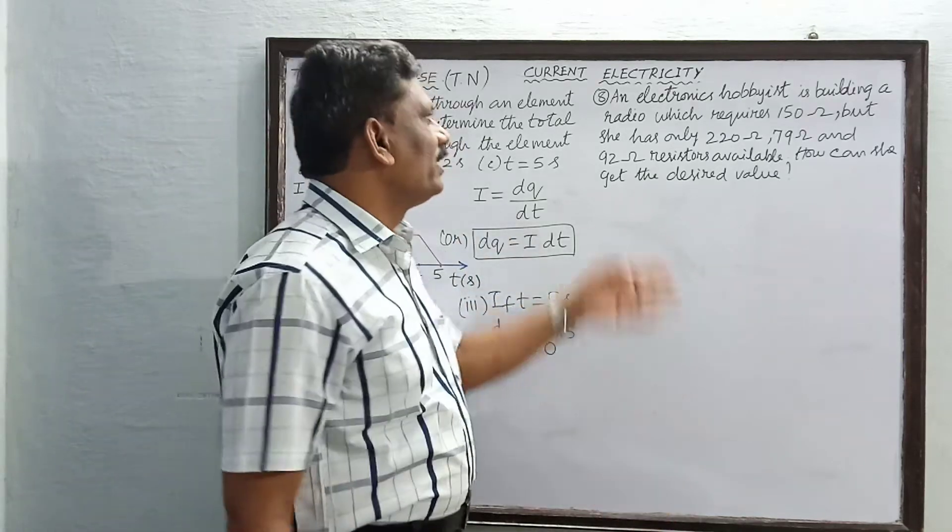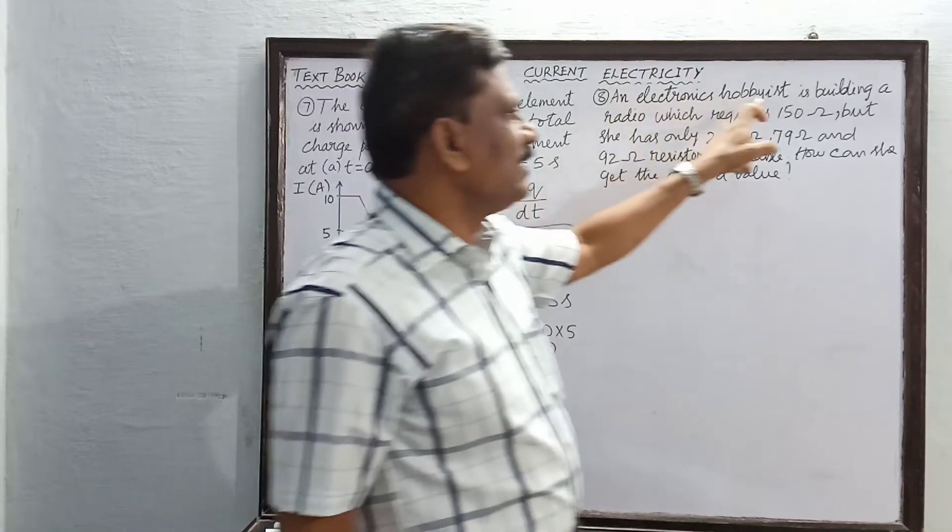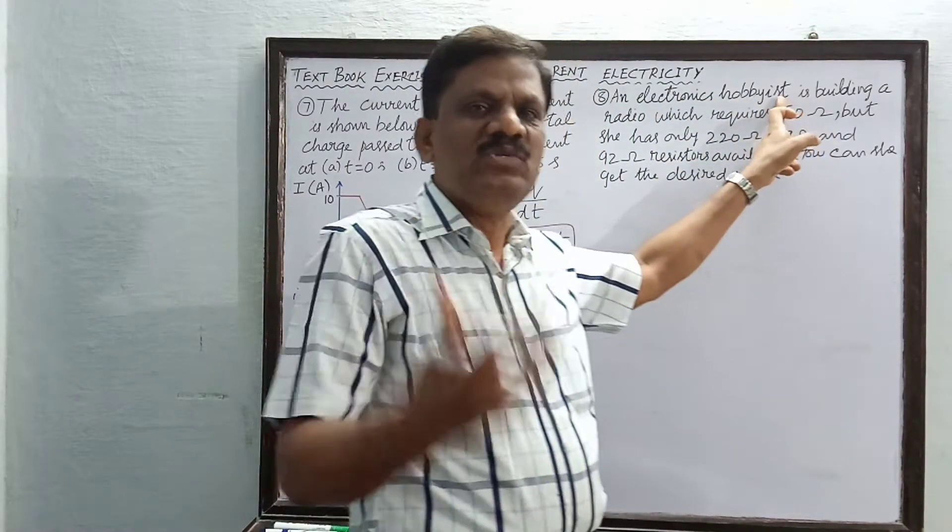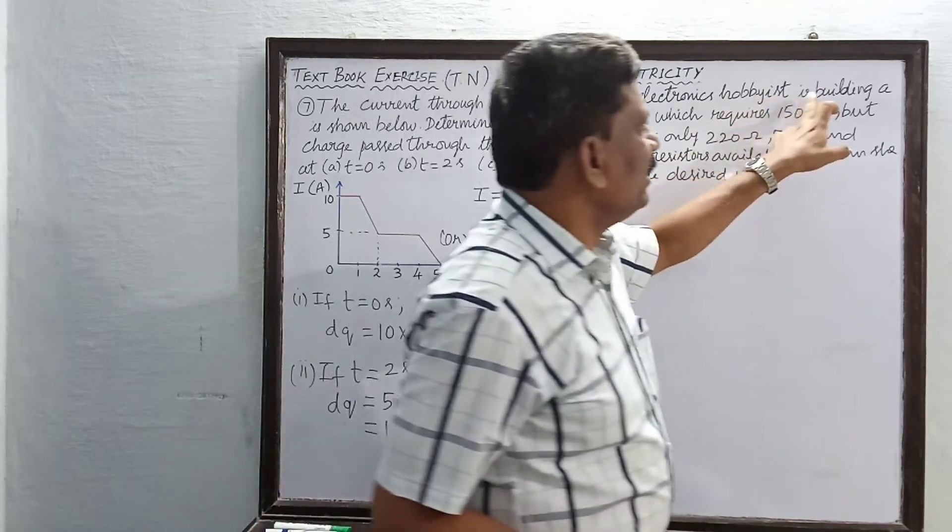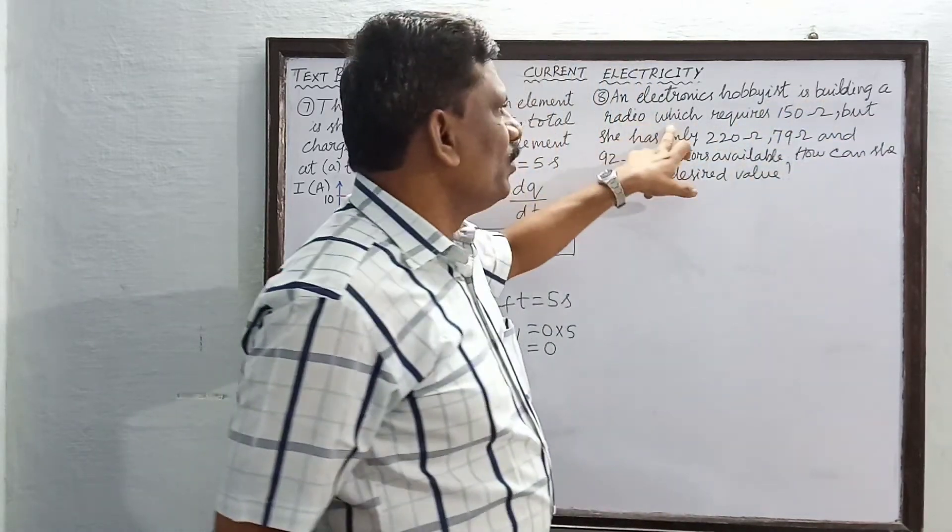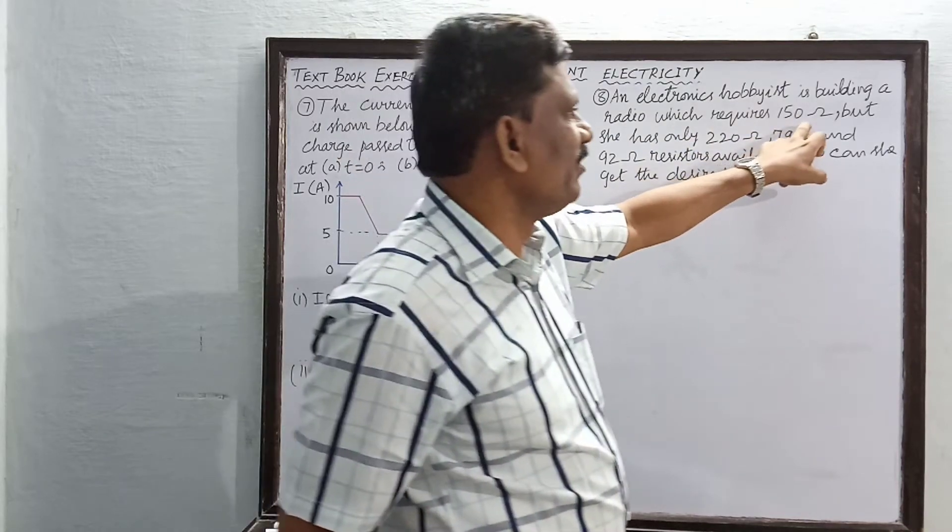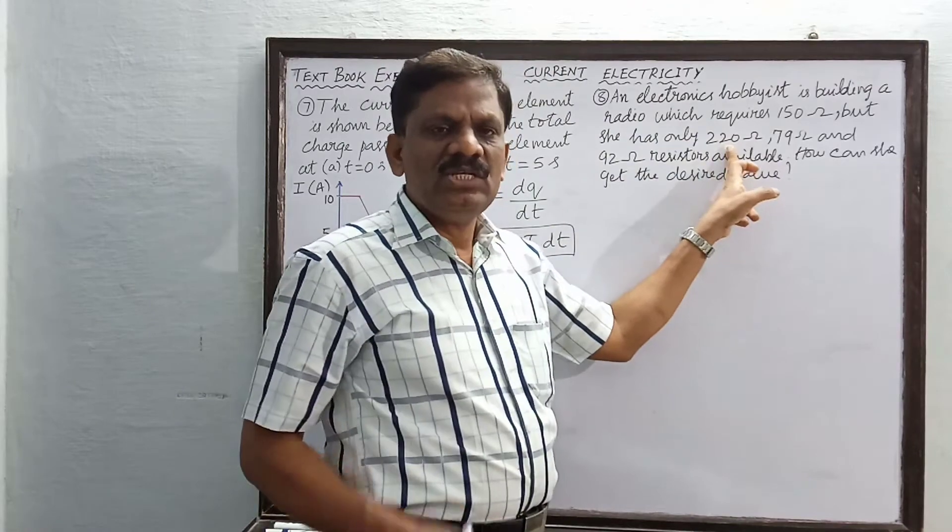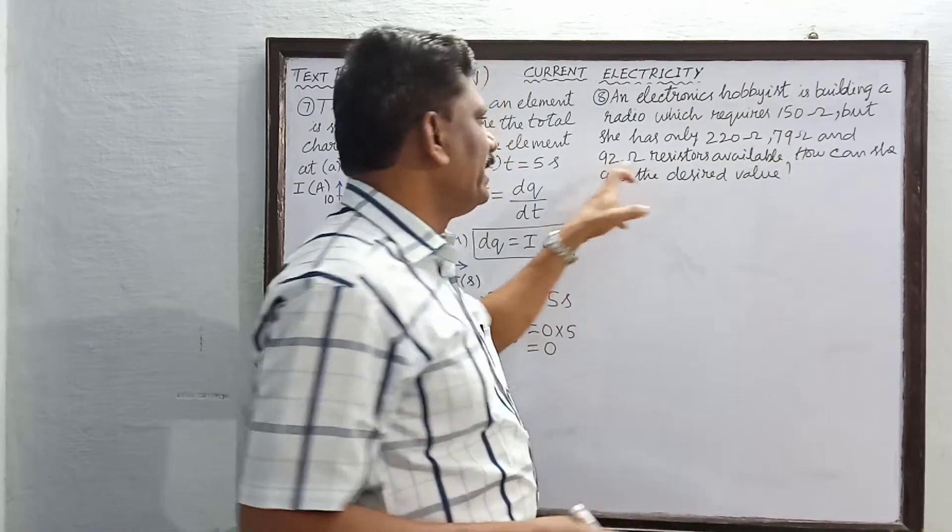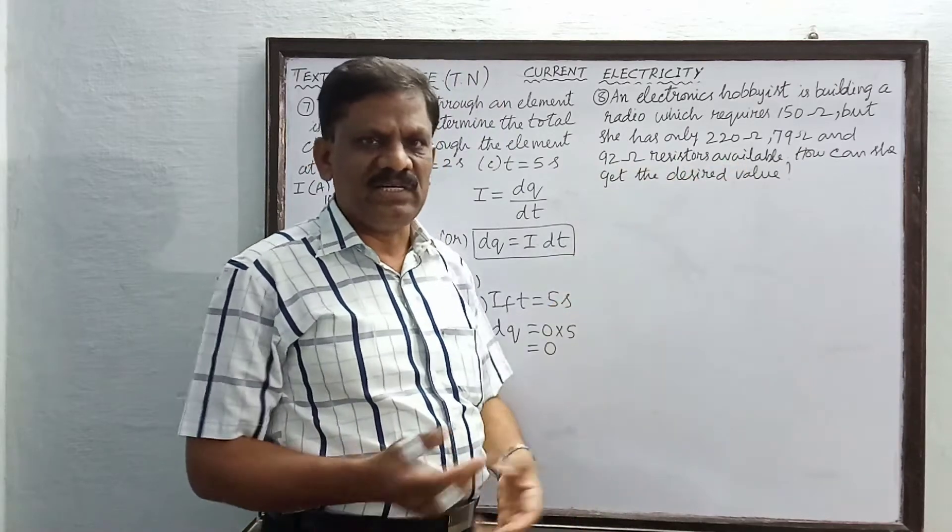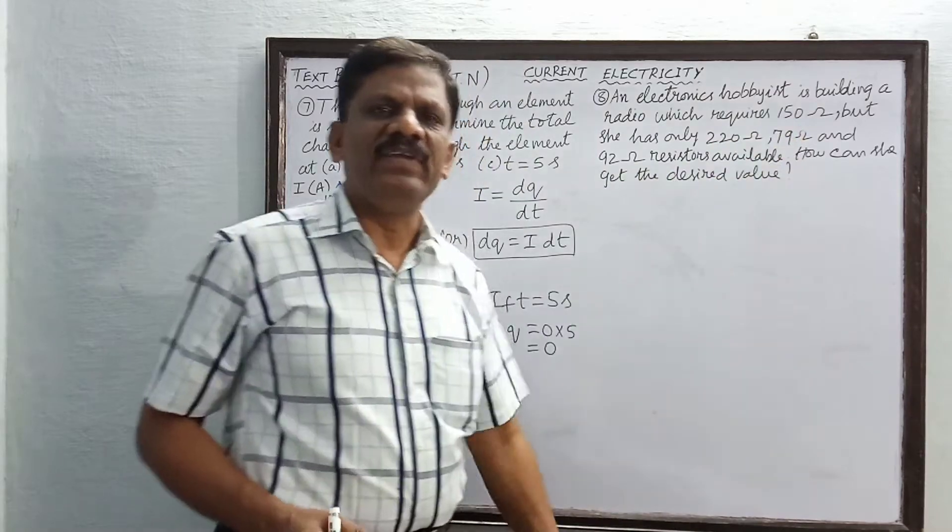Shall we go to the next term? Now we look at problem number 8. An electronics hobbyist, a person who is doing electronics projects as a hobby, is building a radio which requires 150 ohms. She requires 150 ohms, but she has only 220 ohm, 79 ohm, and 92 ohm resistors available.